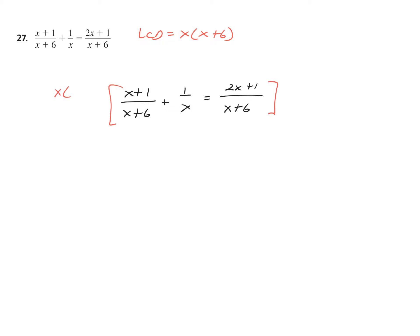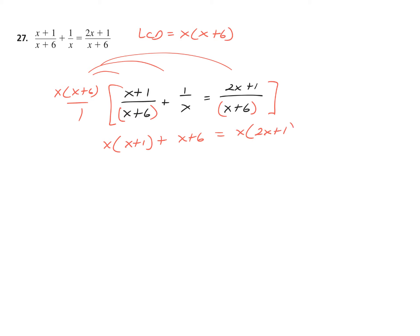Group the equation, LCD over 1, three separate distributions. The X plus 6 on the first distribution simplifies out, leaving me the X and the X plus 1 in the numerator. Plus, the X simplifies out, leaving me X plus 6. Equals — the binomial X plus 6 simplifies out, leaving me X times quantity 2X plus 1.